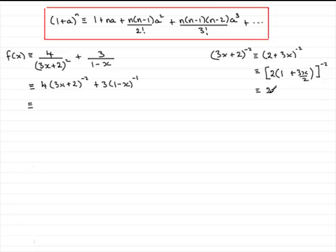Now, this changes to 2 to the power minus 2, 2 to the power minus 2 multiplied by 1 plus 3x over 2 to the power minus 2. So, we need this idea to insert in here. So let's do that.